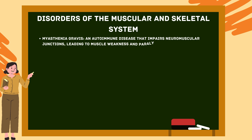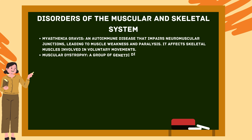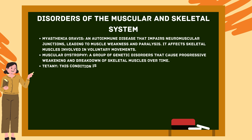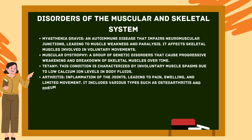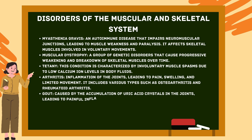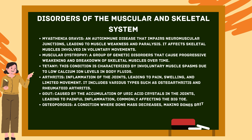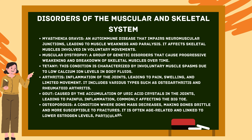Disorders of the muscular and skeletal system: Myasthenia gravis is an autoimmune disease that impairs neuromuscular junctions, leading to muscle weakness and paralysis affecting skeletal muscles. Muscular dystrophy is a group of genetic disorders causing progressive weakening of skeletal muscles. Tetany is characterized by involuntary muscle spasms due to low calcium ion levels. Arthritis is inflammation of joints leading to pain, swelling, and limited movement, including osteoarthritis and rheumatoid arthritis. Gout is caused by accumulation of uric acid crystals in the joints, commonly affecting the big toe.